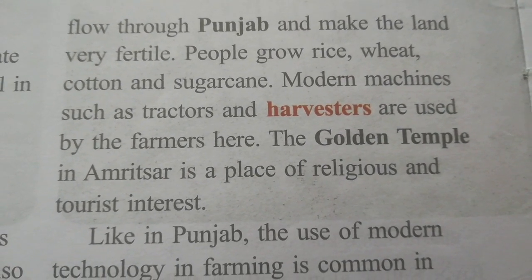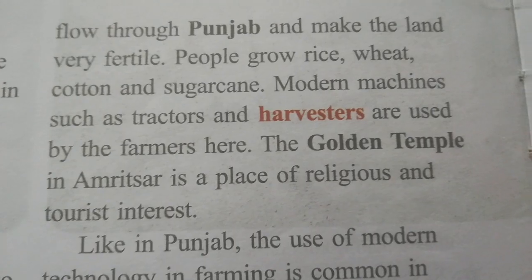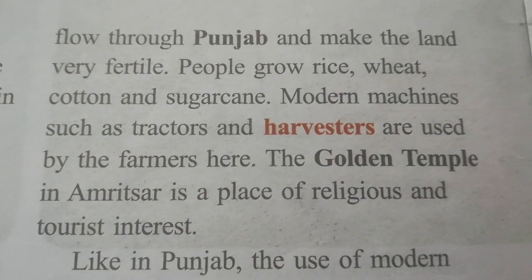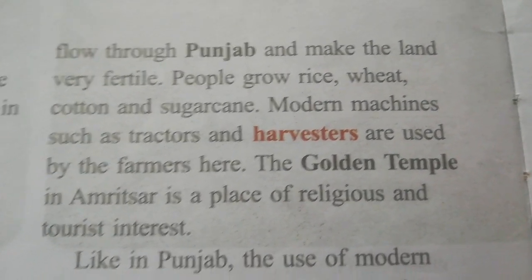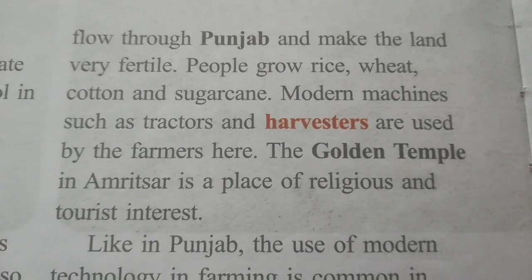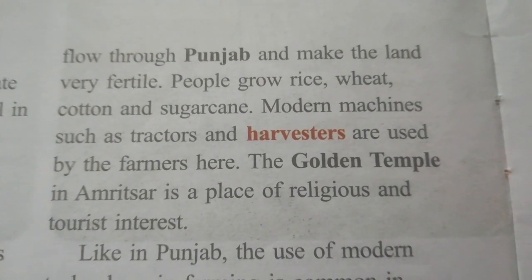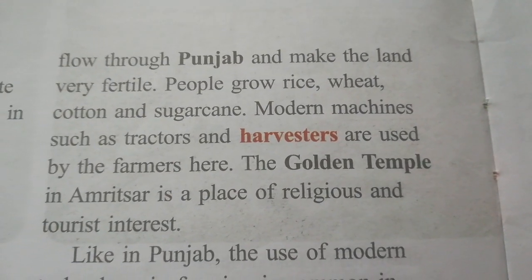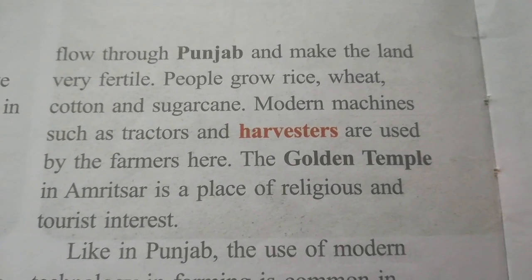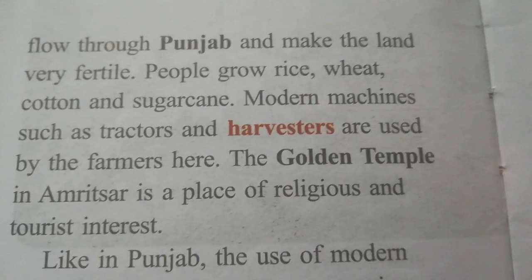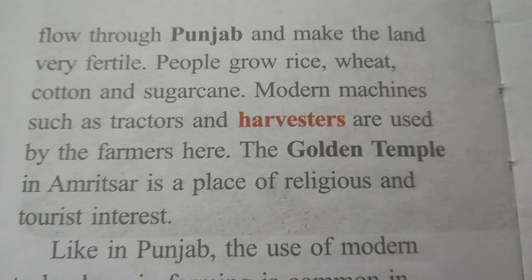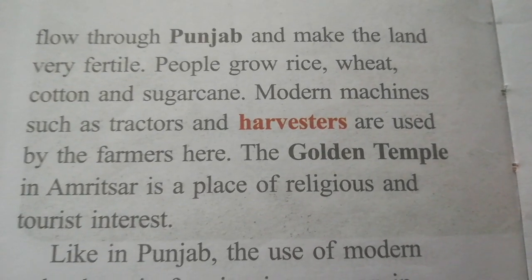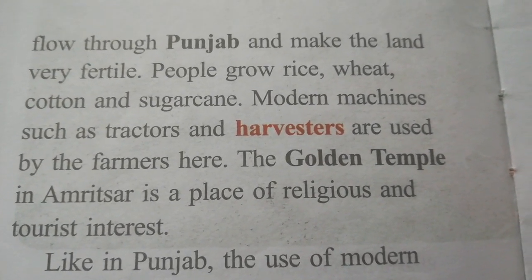The Golden Temple in Amritsar is a place of religious and tourist interest. In the northern plains, farmers grow many crops and use many modern big machines to help cut the crops.